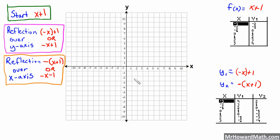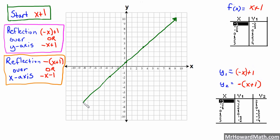So we've got the point negative 3, negative 2. This is simply a line with a positive 1 slope and a Y-intercept of 1 — when X is 0, Y is 1. We'll put one more point at 3 comma 4. Alright, so there's our parent function line. Let's talk about the reflection over the Y-axis.